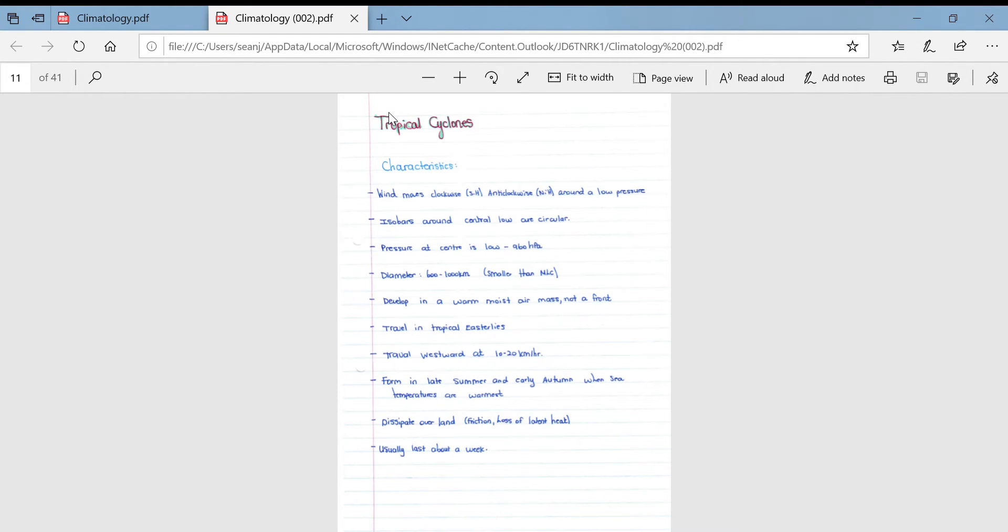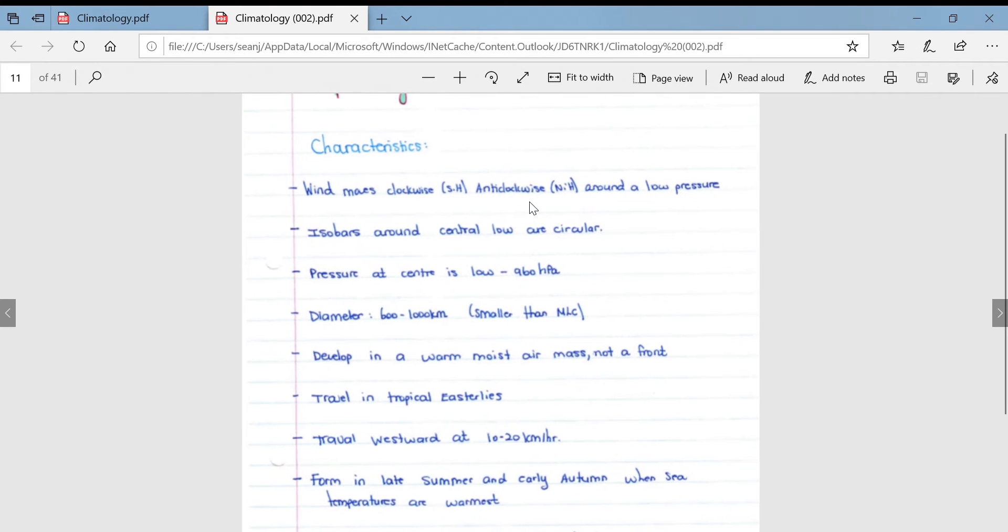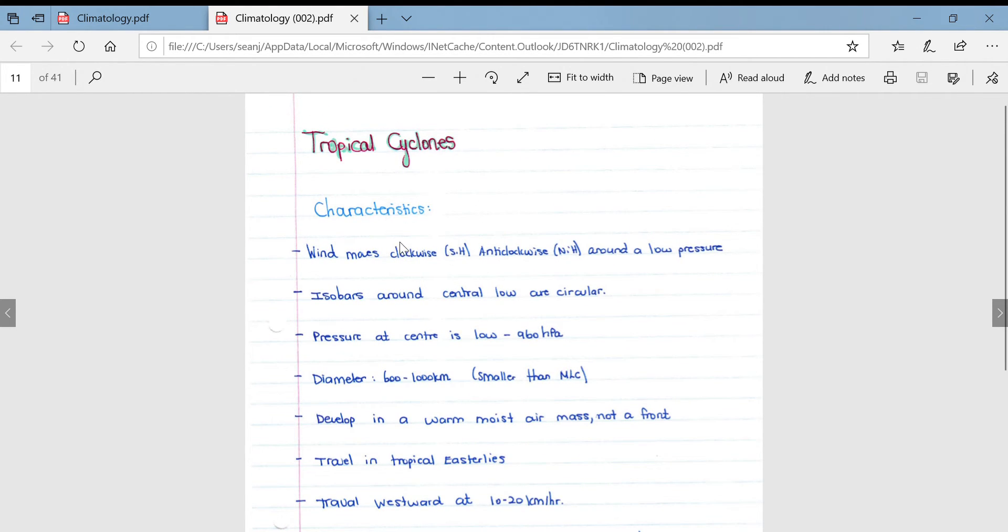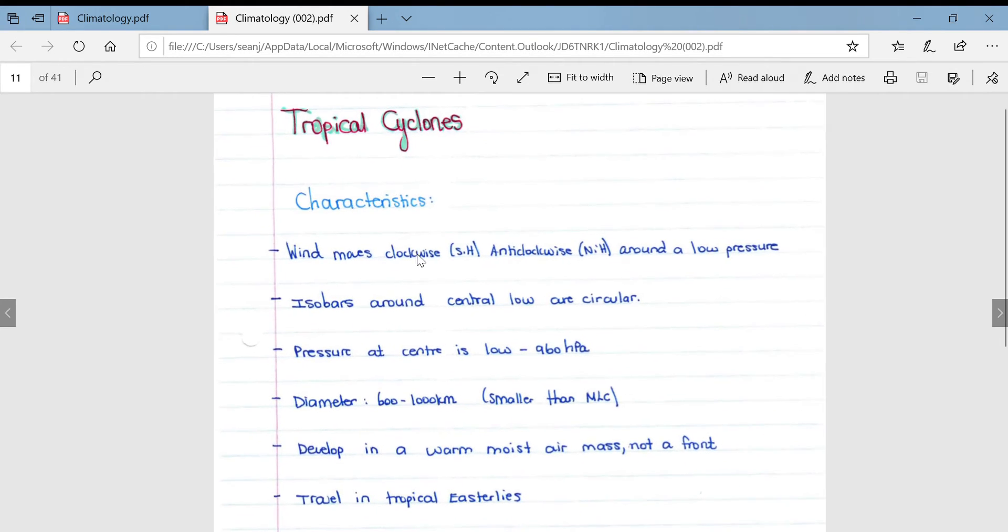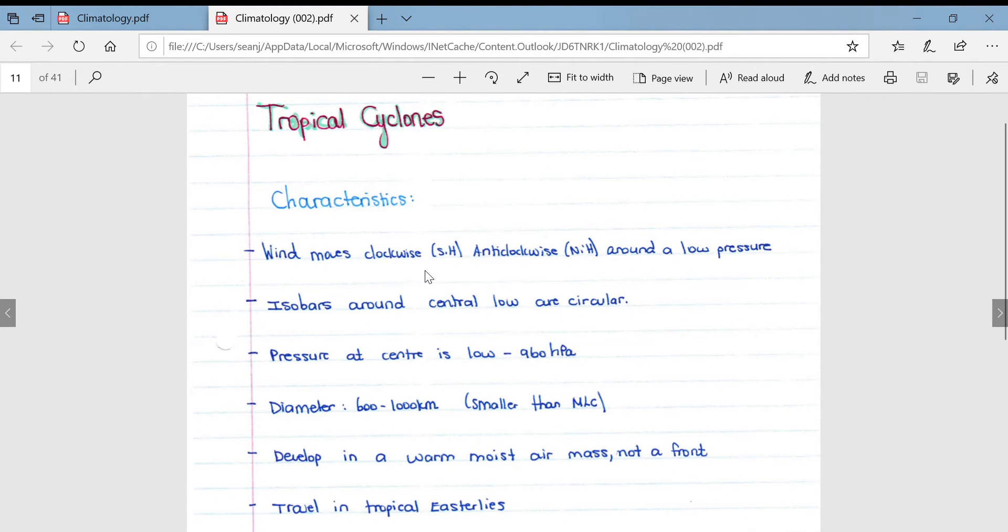This video will look at the climatology section of the geography syllabus, specifically focusing on tropical cyclones. Before we start, just a couple characteristics of tropical cyclones: the wind moves clockwise in the southern hemisphere and anti-clockwise in the northern hemisphere around the low pressure. And remember, a low pressure has wind coming into it. Then the isobars are around a central low pressure and they are circular in shape.